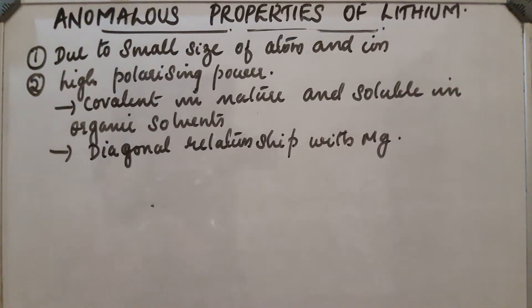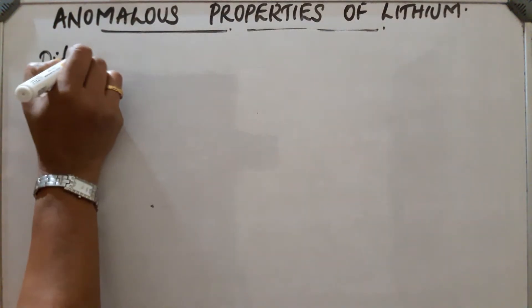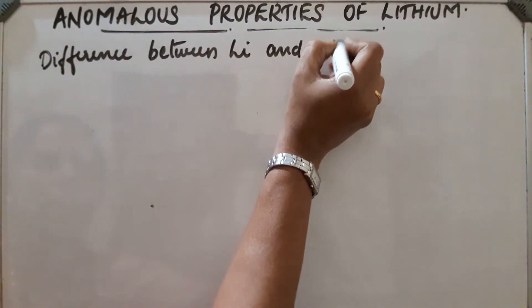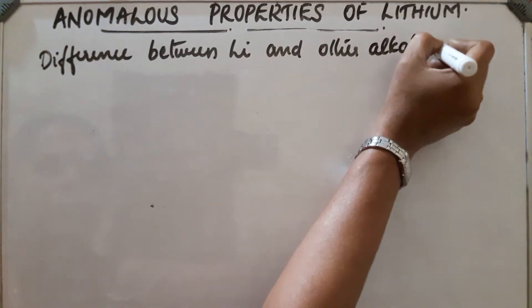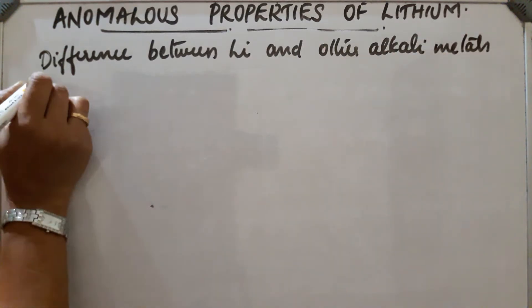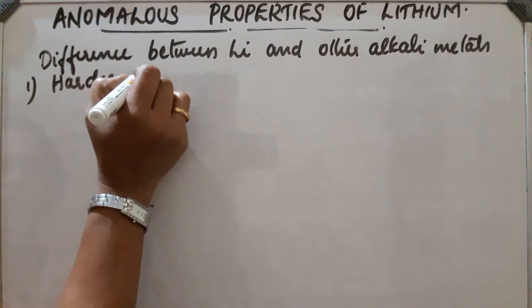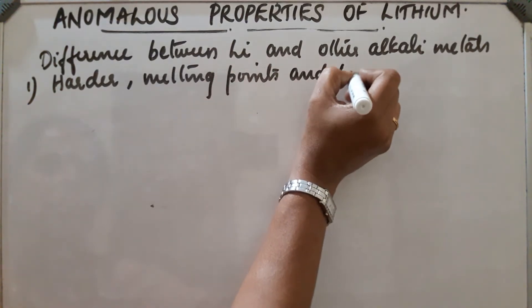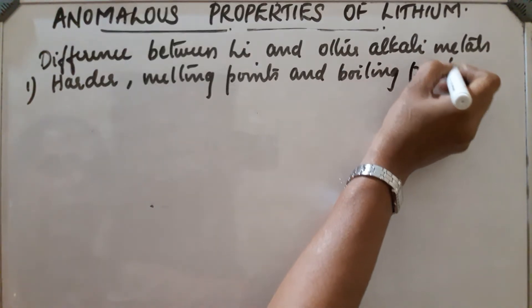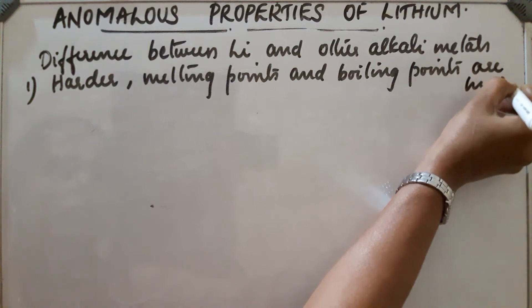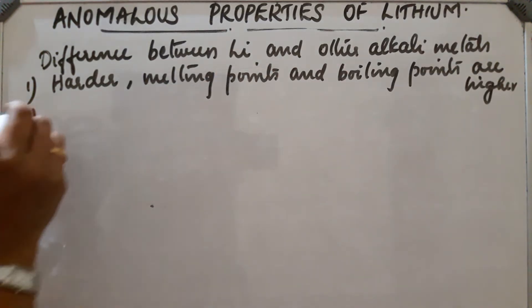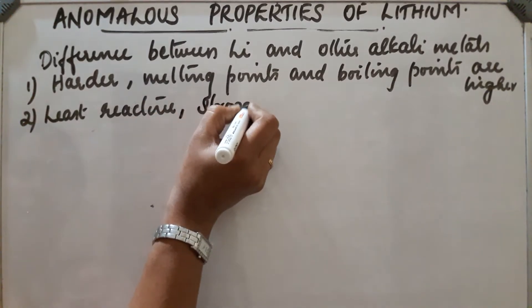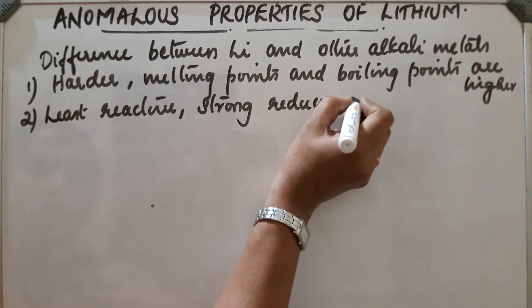Differences between lithium and other alkali metals: first point, lithium is harder and its melting point and boiling points are higher than other alkali metals.